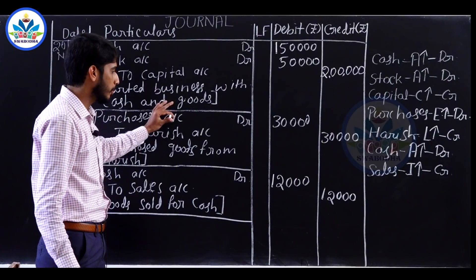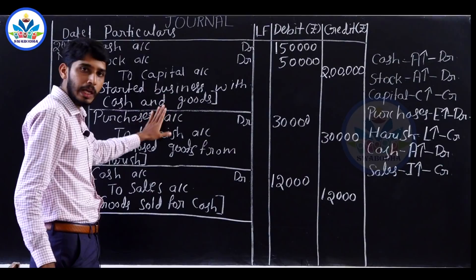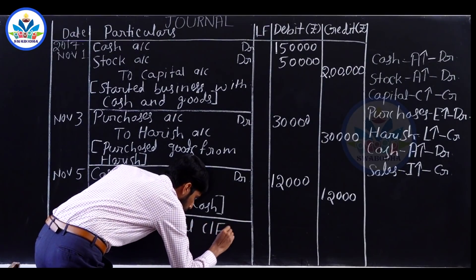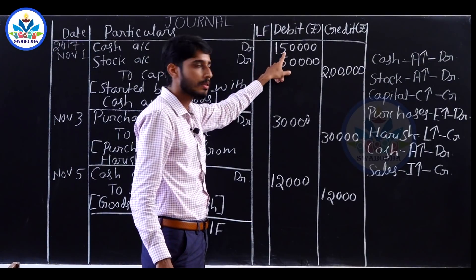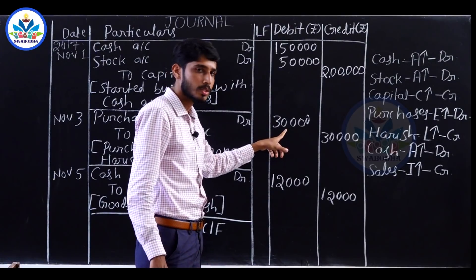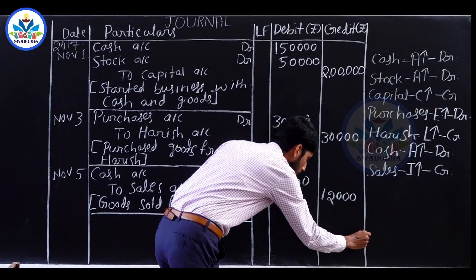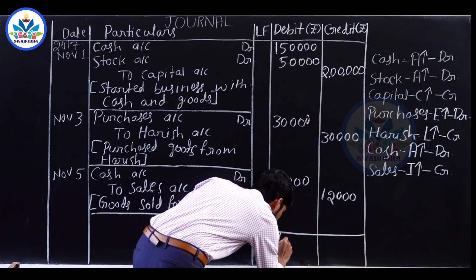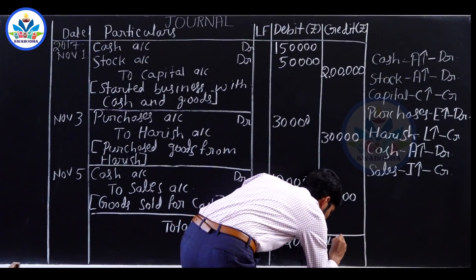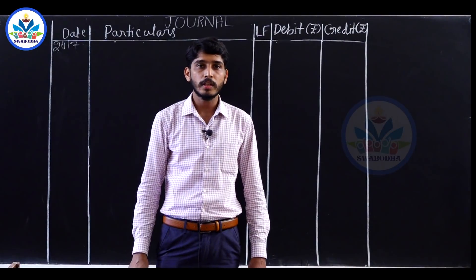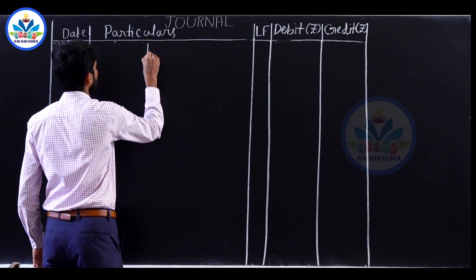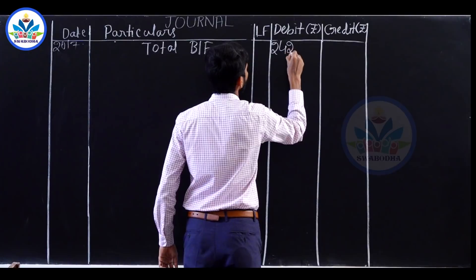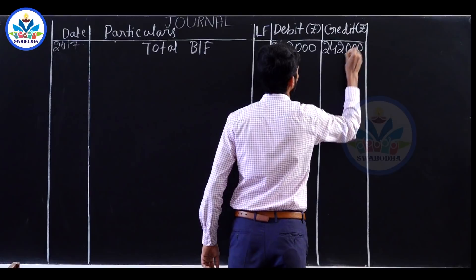The page in the journal book has ended, so we calculate the total of this page to carry forward to the next page. Total: ₹1,50,000 + ₹50,000 + ₹50,000 = ₹2,00,000, plus ₹30,000 = ₹2,30,000, plus ₹12,000 = ₹2,42,000. This total of ₹2,42,000 is carried forward. Total brought forward ₹2,42,000 is recorded on both debit and credit columns of the next page.